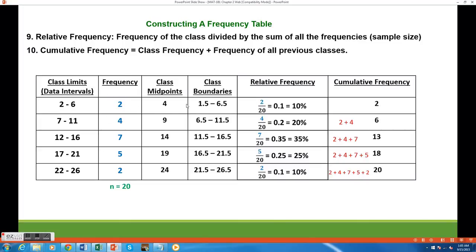The cumulative frequencies of each successive class would be the class frequency plus all the class frequencies of the previous classes. So for the second class, which has a class frequency of 4, I would add that to the previous class frequency of 2.